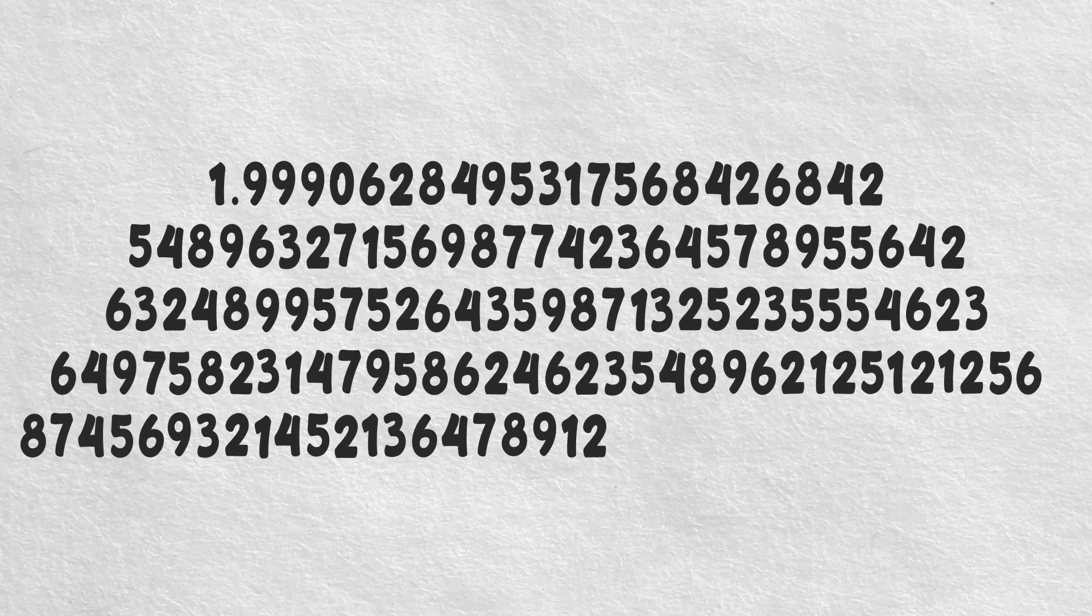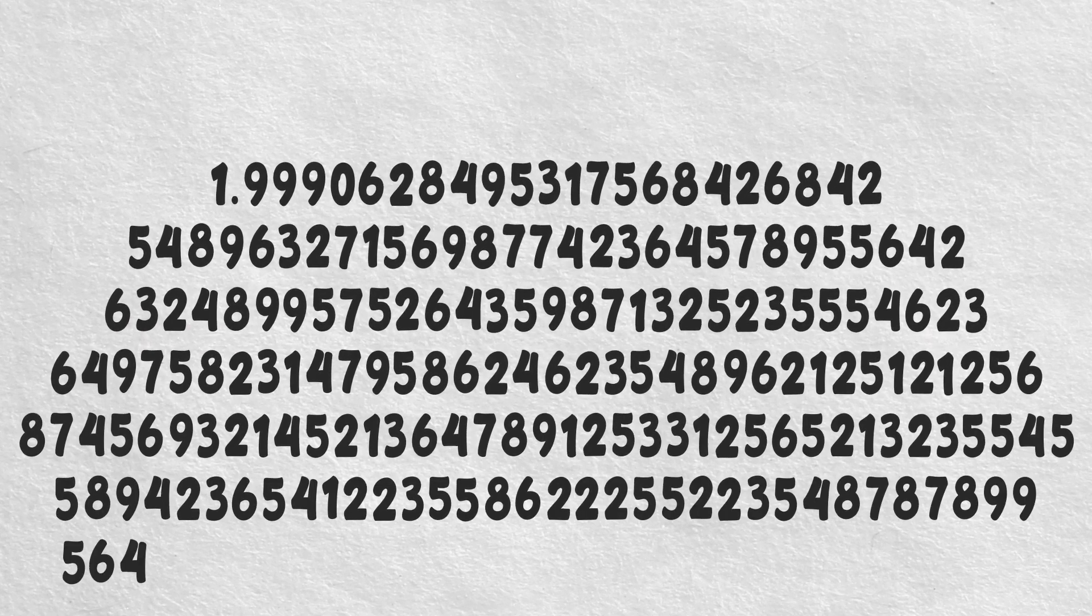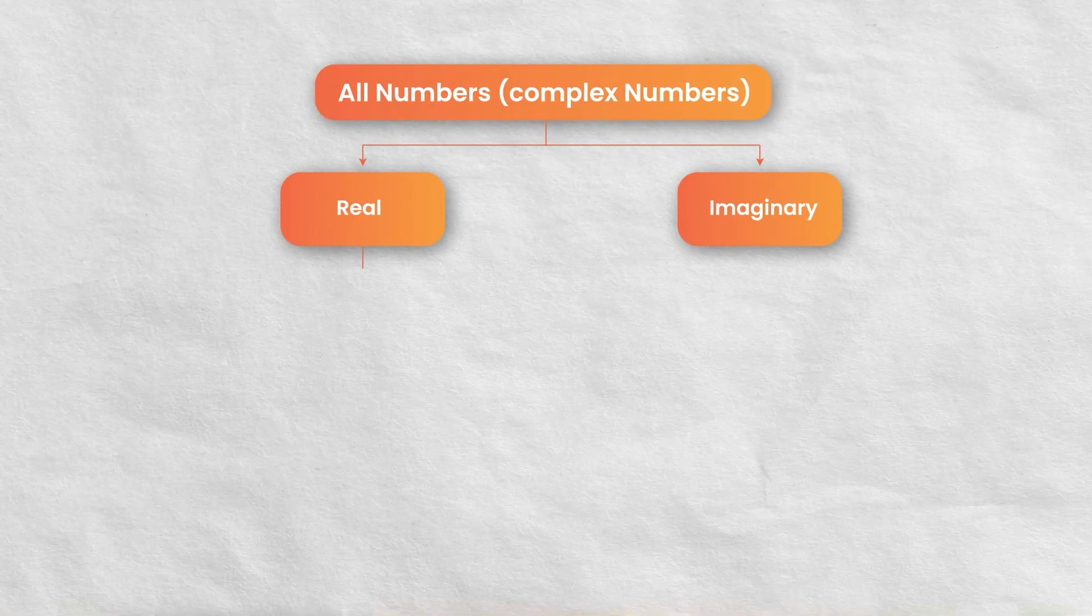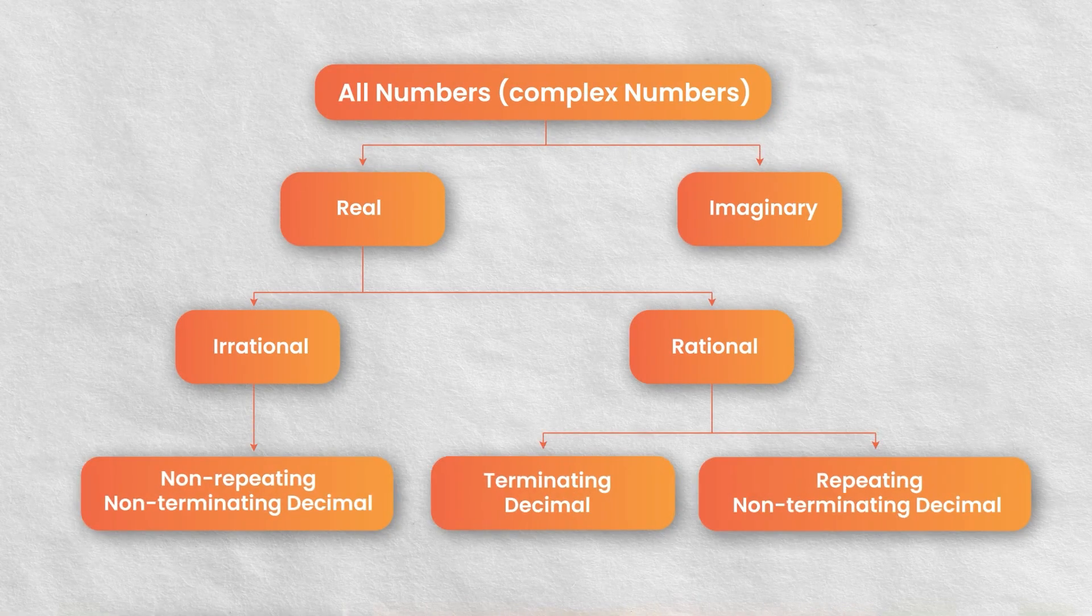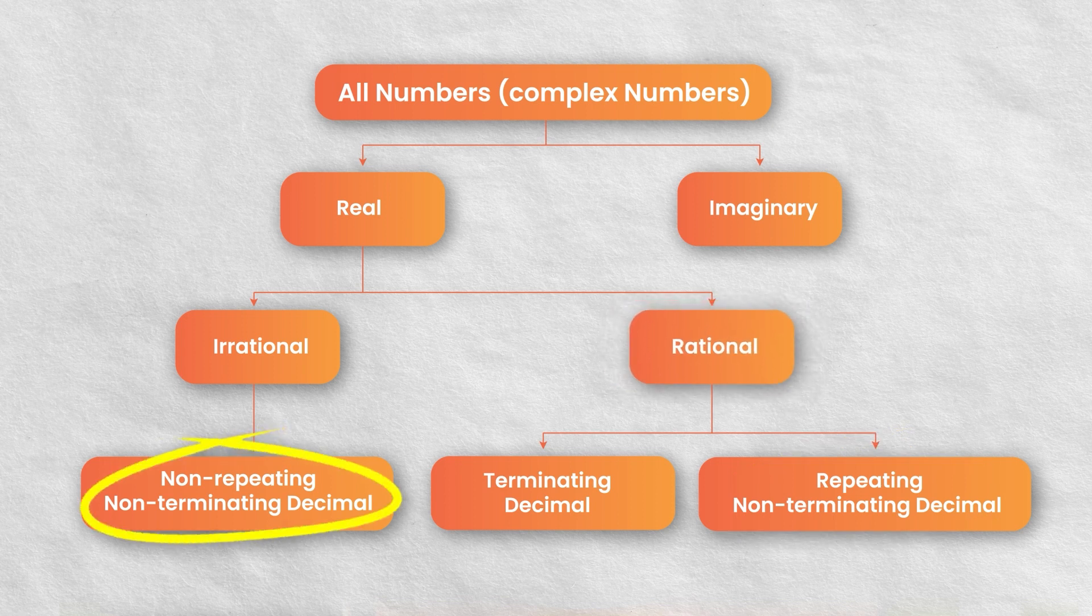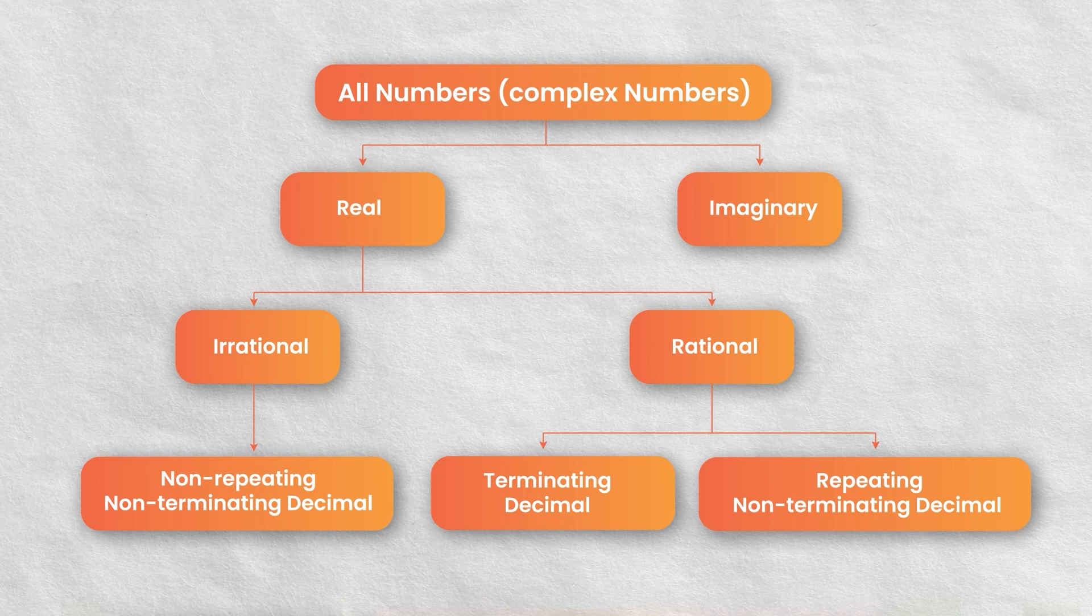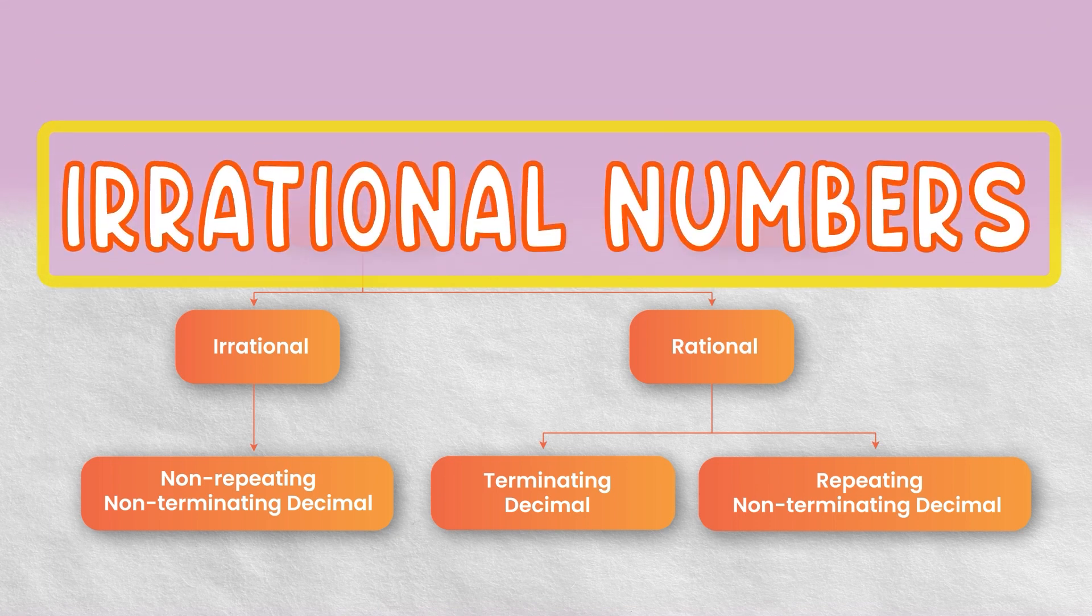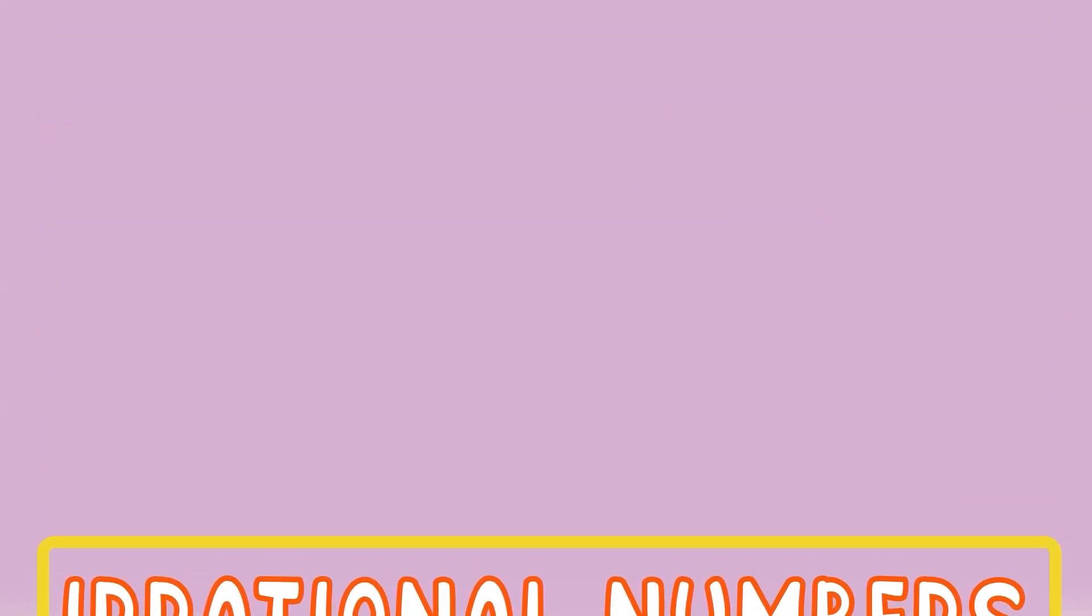Haha, correct. And sometimes they just don't end. Those are called non-terminating decimals. Non-terminating decimals can be of two types: repeating decimals and non-repeating decimals. Non-terminating, non-repeating decimals that can literally go on forever are called irrational numbers. Oh wow, their name justifies their quality.